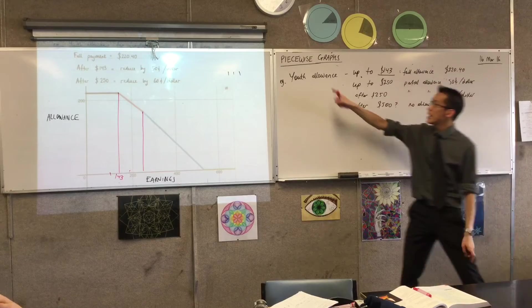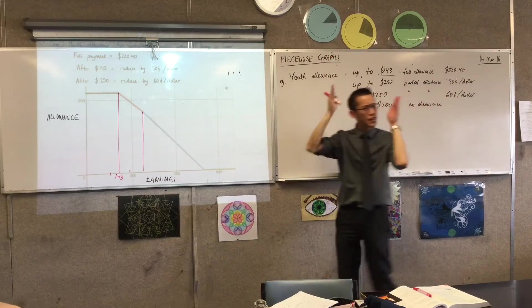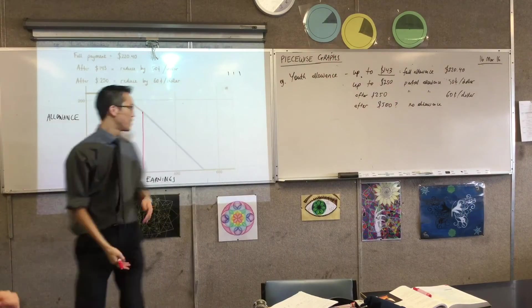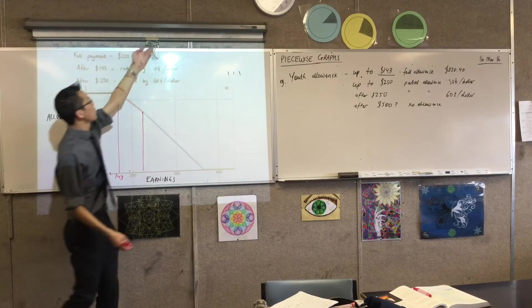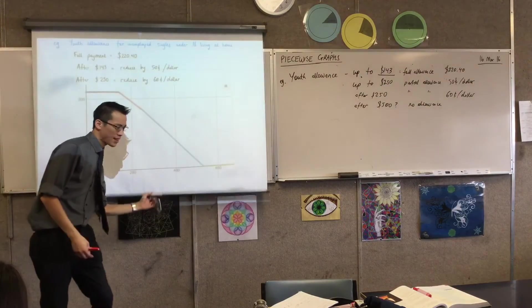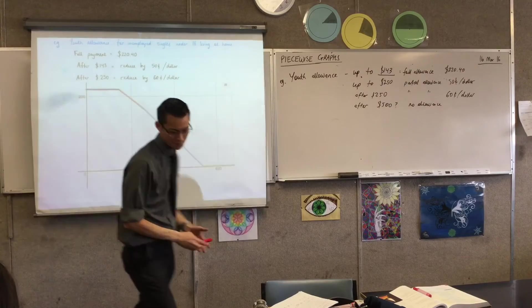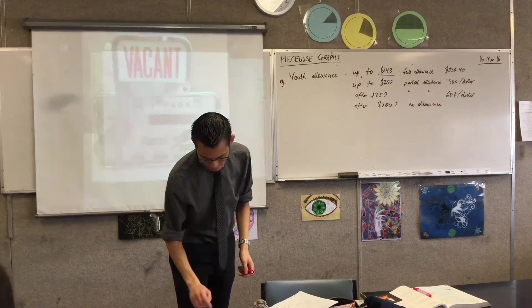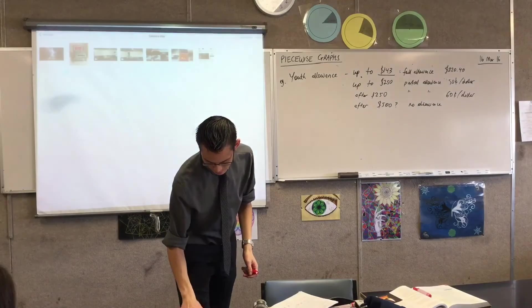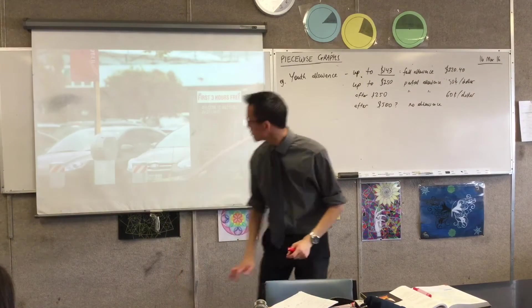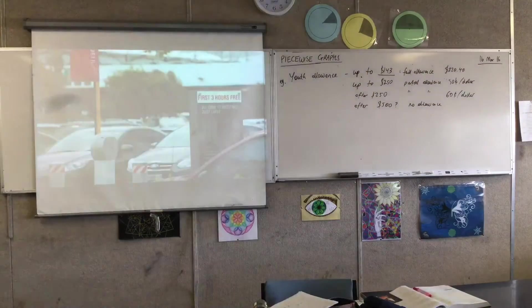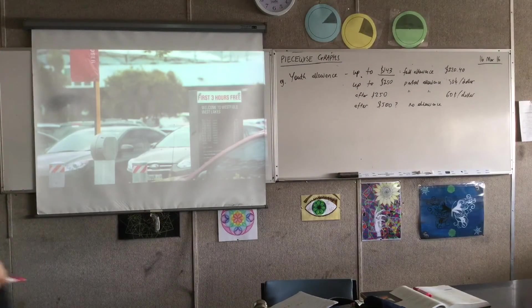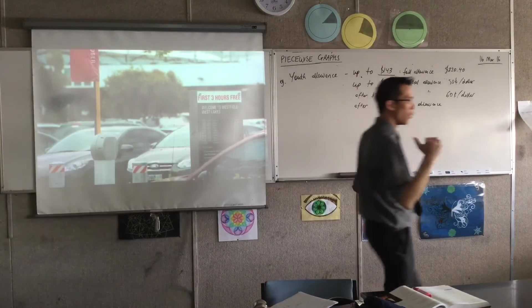So what we call this is a piecewise graph. You've got different pieces of the graph that are behaving in different ways. So I'm going to show you another one. Let's tell them I think I am going to need the lights. Definitely lights. I'll zoom in in a second, but you've got the context.